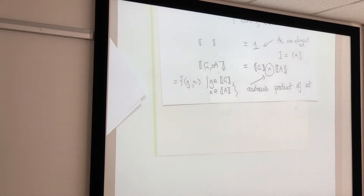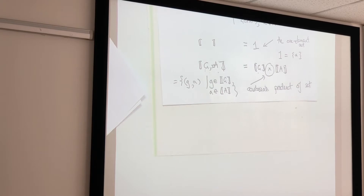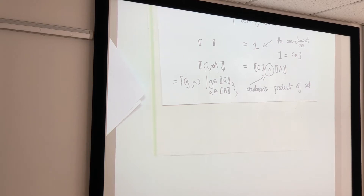So now all I need to do is tell you how to translate terms to functions. There were two types and two clauses for types; now there are five sorts of terms — applications, abstractions, variables, additions, and numbers — so we're going to have five rules, one for each.